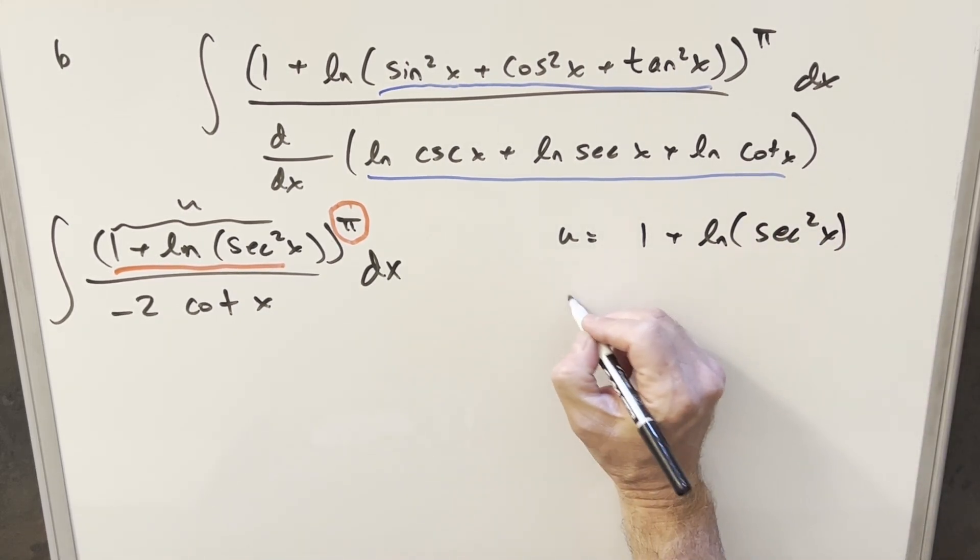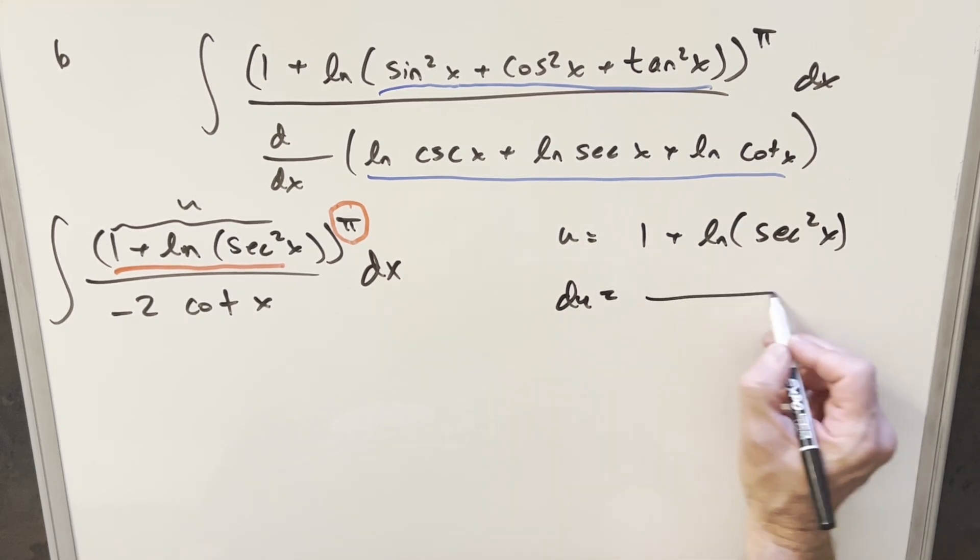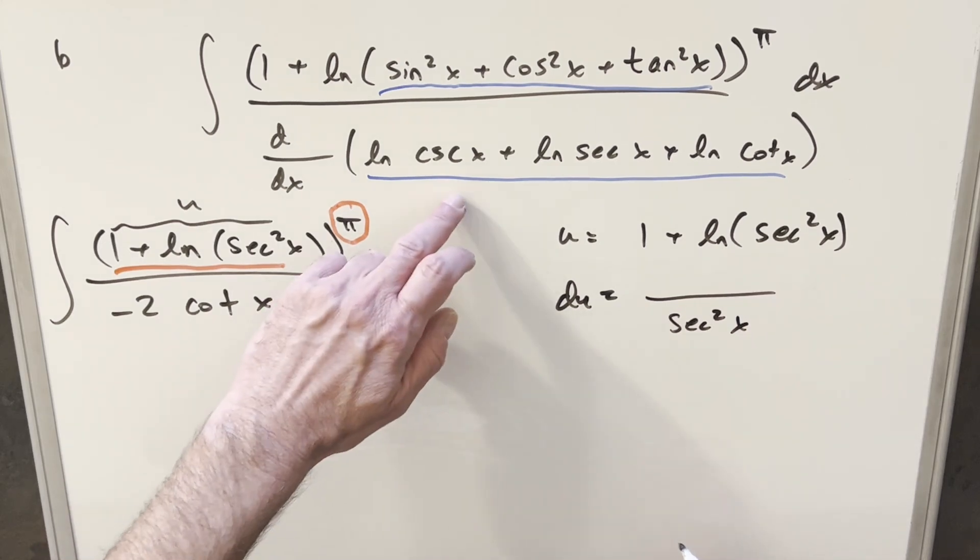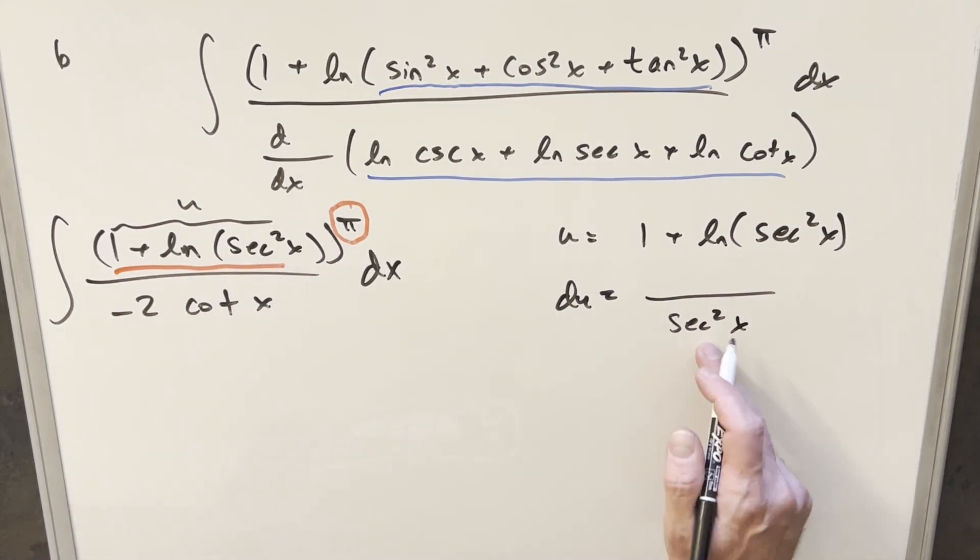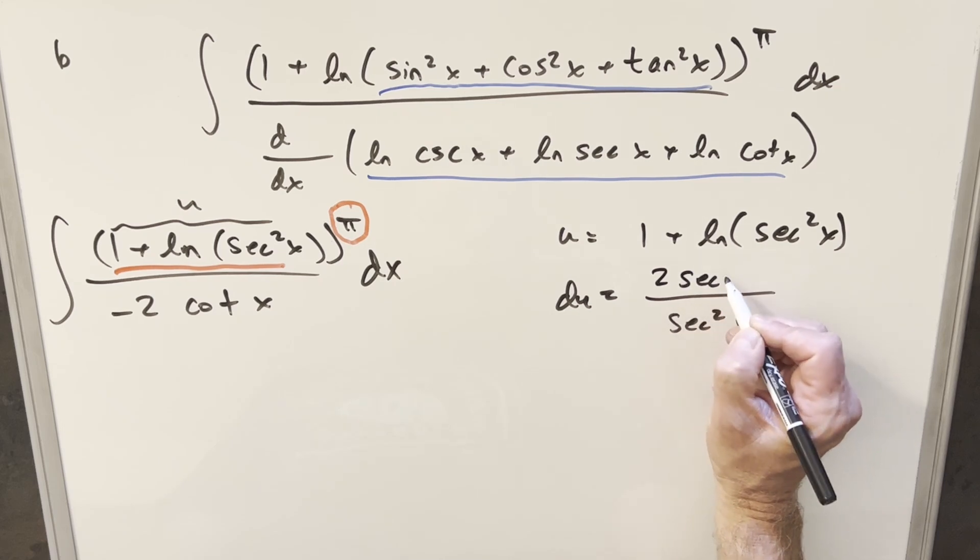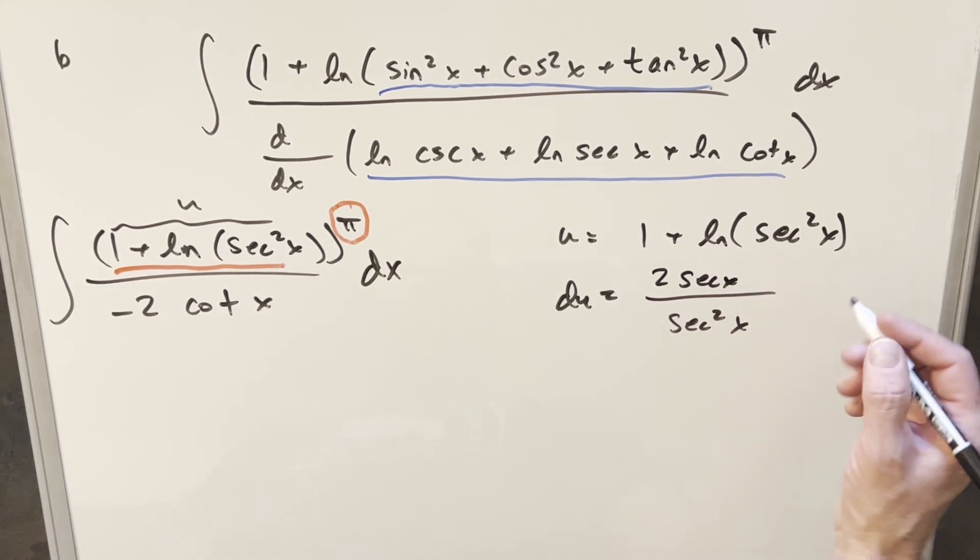Take a derivative on this, then derivative of 1 is just 0. Derivative here, that's going to give me 1 over secant squared x. This is kind of like what we did over here with this. Then chain rule on this, derivative of this is going to be 2 secant x. Chain rule again, derivative of secant x is going to be secant x times tangent x.